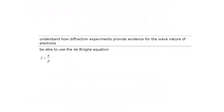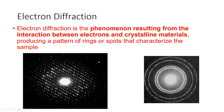Now we look at how diffraction experiments provide evidence for the wave nature of electrons, and how to use de Broglie's equation: λ = h/p, where λ is wavelength, h is Planck's constant, and p is momentum.